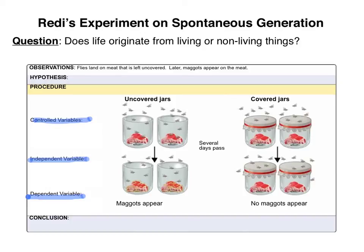Last but not least, the controls — remember, controls are not the same as constants. What do you think Redi would have used as a negative control in his experiment? The covered jars. If Redi was trying to test the hypothesis on spontaneous generation, by covering the jars and not giving the adult flies access to the raw meat, he would have been able to determine whether or not the raw meat was able to generate the maggots on its own. In other words, if Redi were using the appearance of maggots as his dependent variable, and he created an experimental setup where no maggots appeared, then he had his negative control.